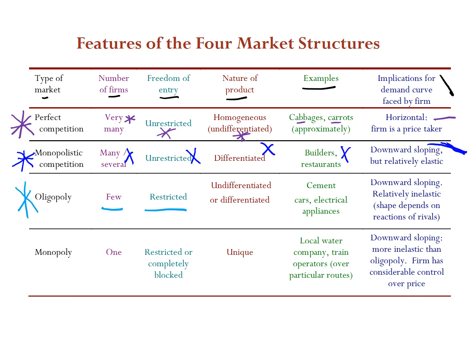The products in an oligopoly are somewhat differentiated. A great example is the oil industry — OPEC countries all sell oil with very slight differences. Another example is the car industry: Mercedes, BMW, and Audi all sell cars with different features, there are few of them, and they make it hard for others to enter through high startup costs, high legal requirements, and specialist skills. Other examples include banking, insurance, building, and technology industries.